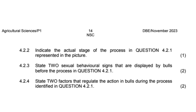State two factors that regulate the action in bulls during the mating process identified in question 4.2.1. One factor is genetics - certain breeds may have different mating behavior. Another is hormonal influences - the testosterone of a bull can affect its libido and mating behavior.